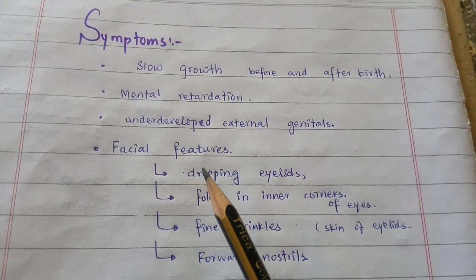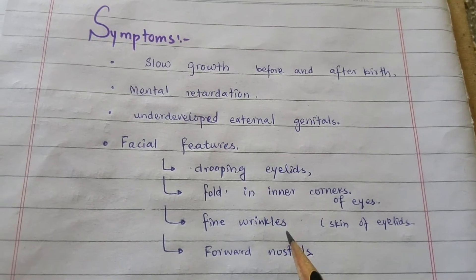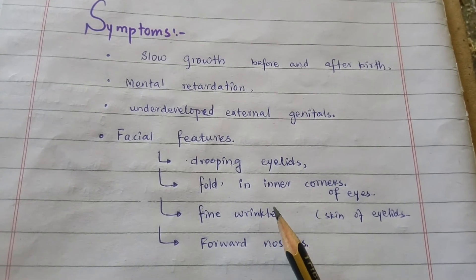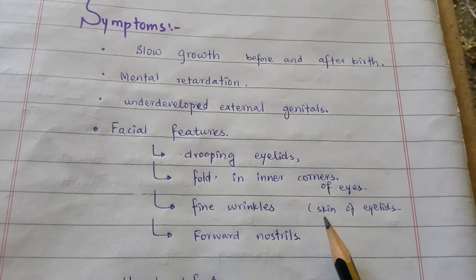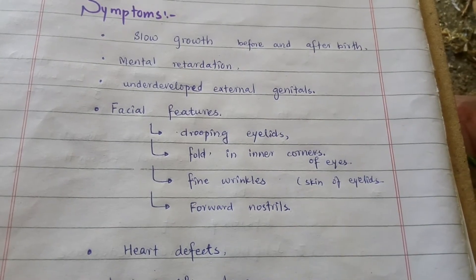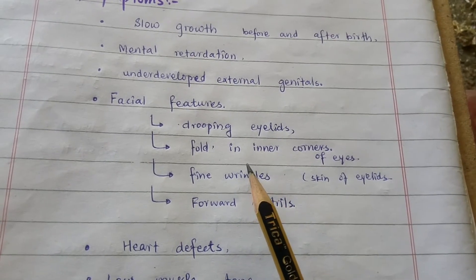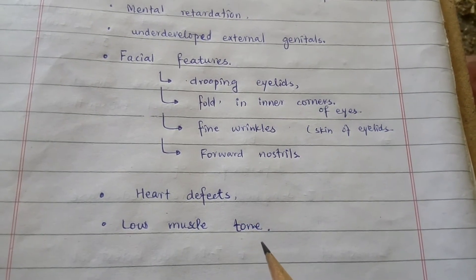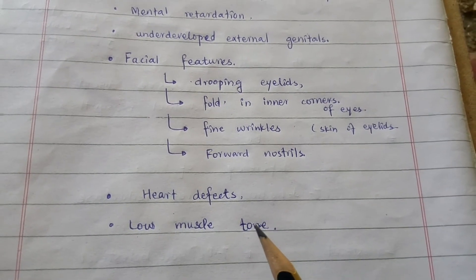Facial features associated with SLOS include drooping eyelids, folds in the inner corners of the eyes, fine wrinkles of the skin of the upper and lower eyelids, forward-pointing nostrils, a long upper lip, and large external ears. Heart defects and low muscle tone can also be seen in affected individuals.